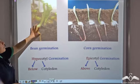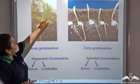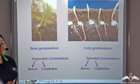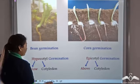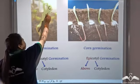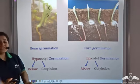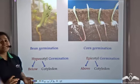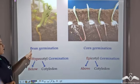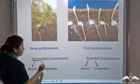In case of bean germination, the shoot remains below the cotyledon. This is the cotyledon and this is the shoot. So the shoot remains below the cotyledon, and hence this type of germination is called hypocotyl germination.